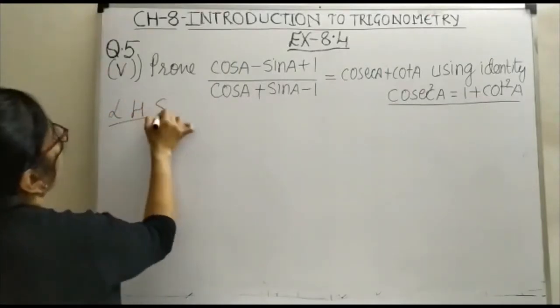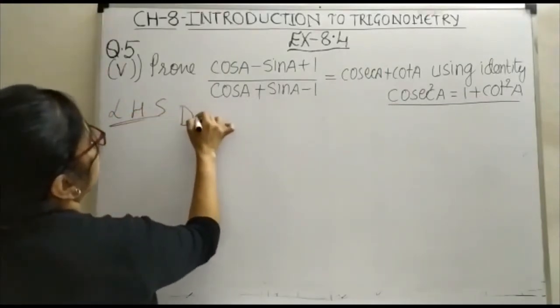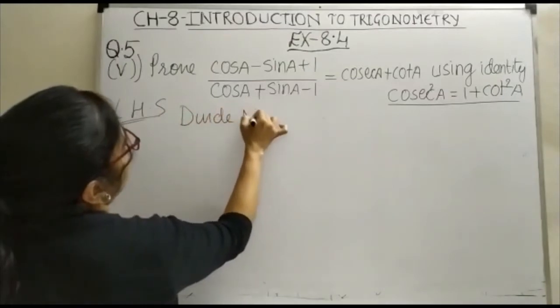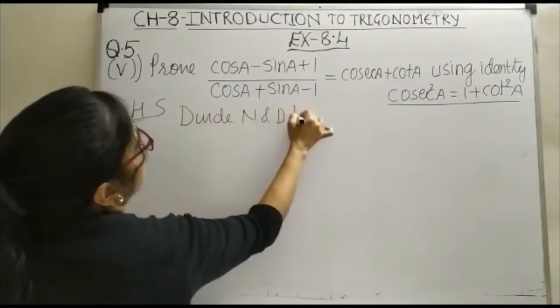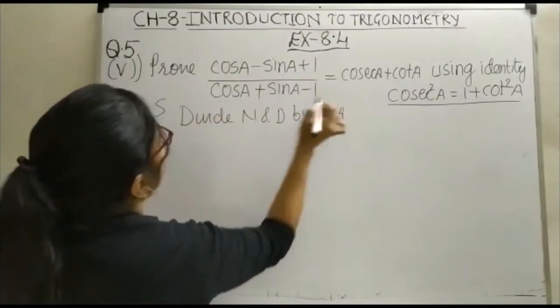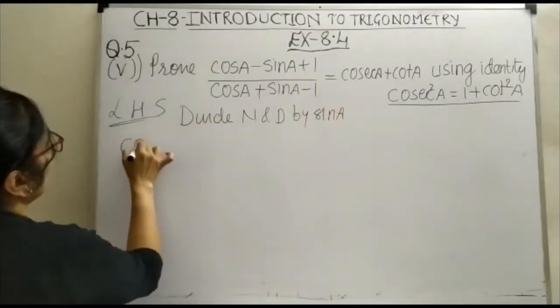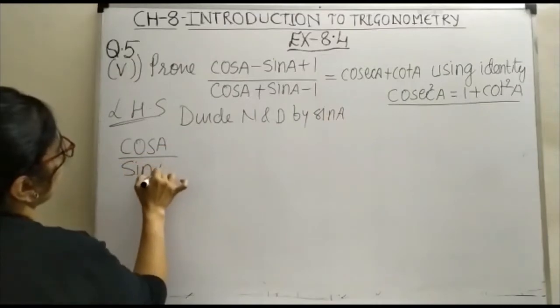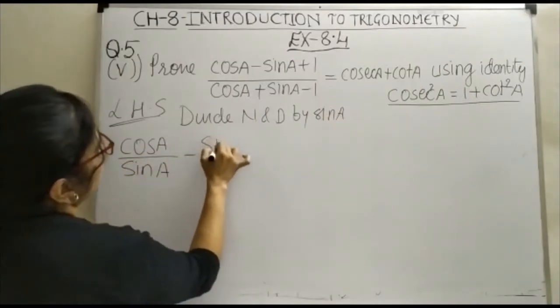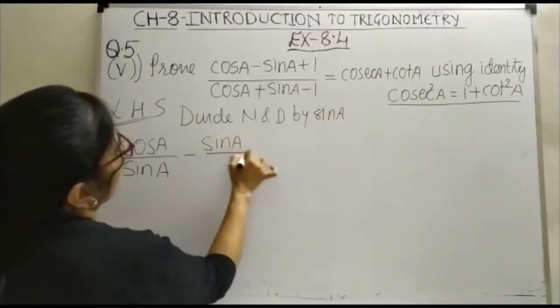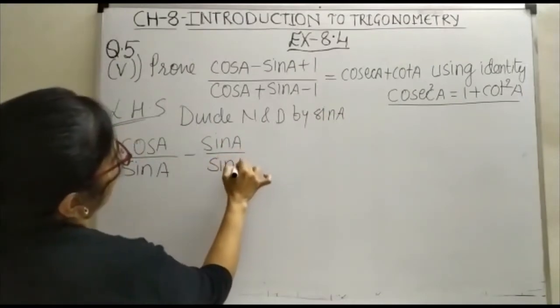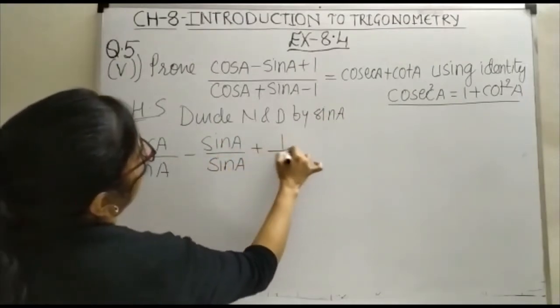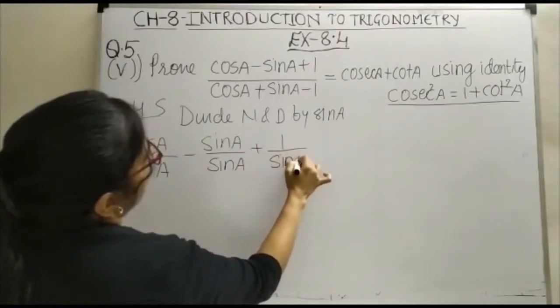We will start from left hand side. Divide numerator and denominator by sinA. So, this takes the form cosA upon sinA minus sinA upon sinA plus 1 upon sinA